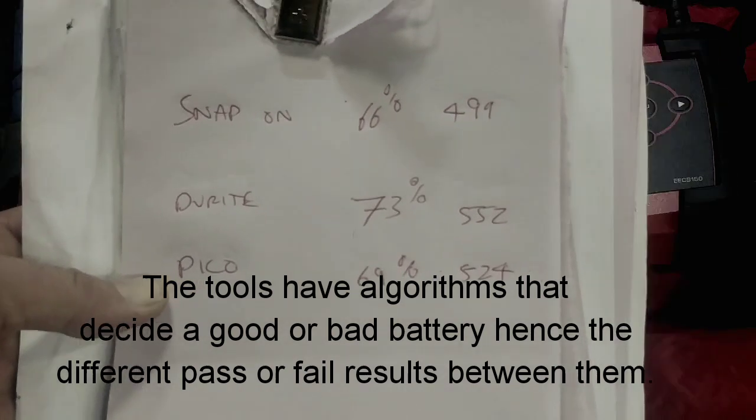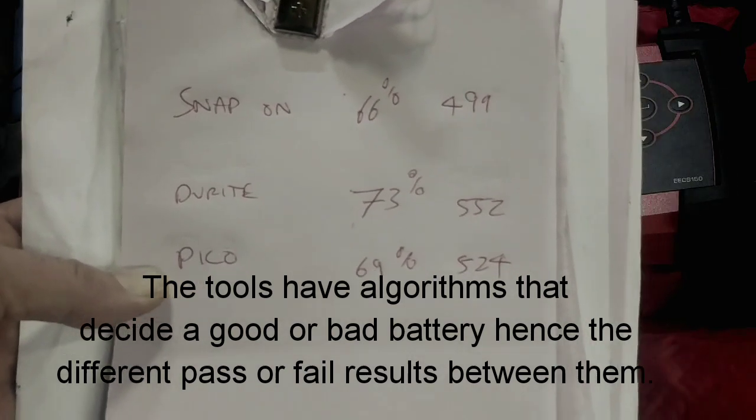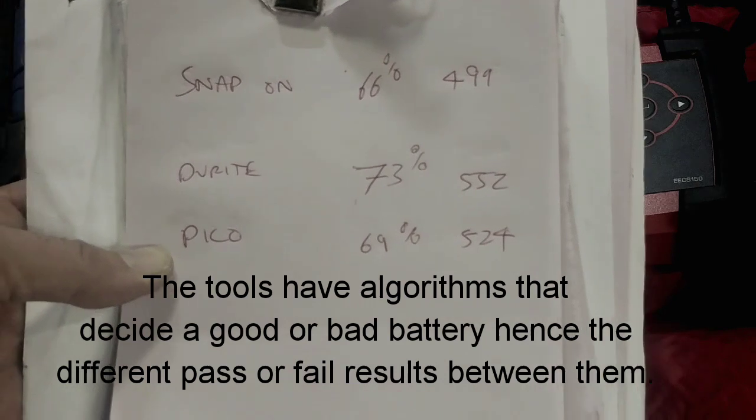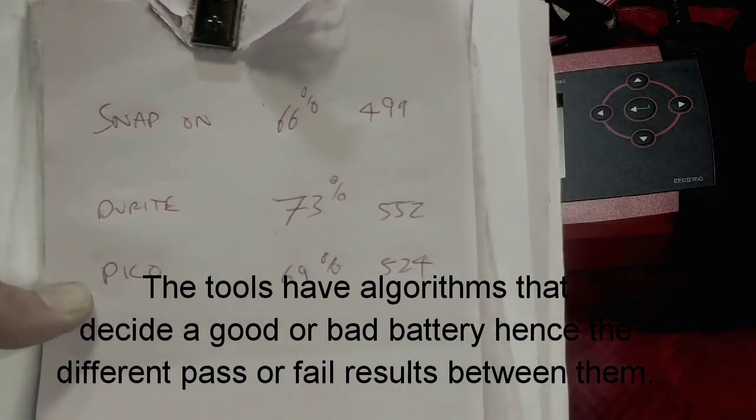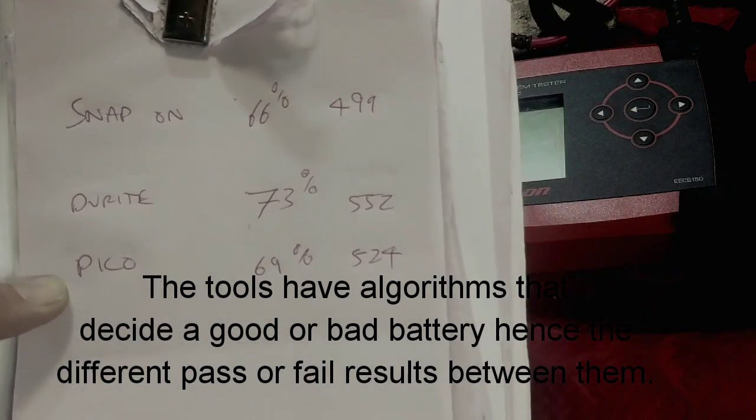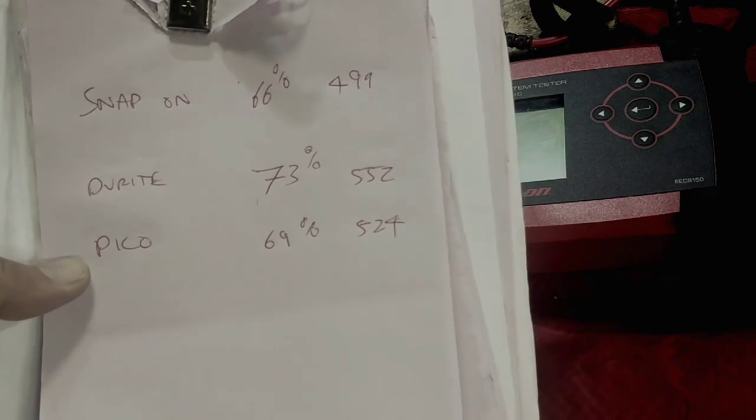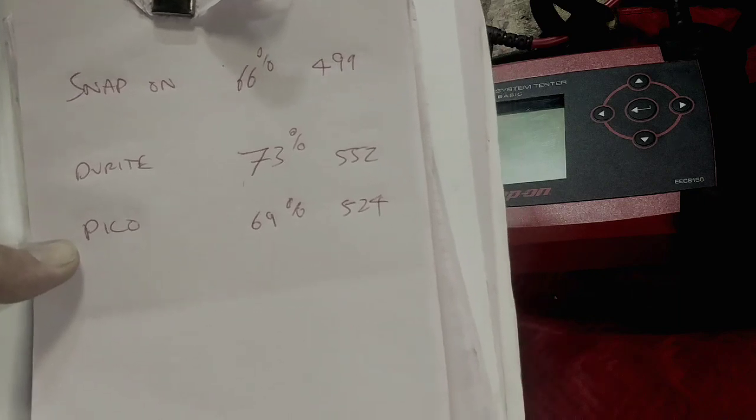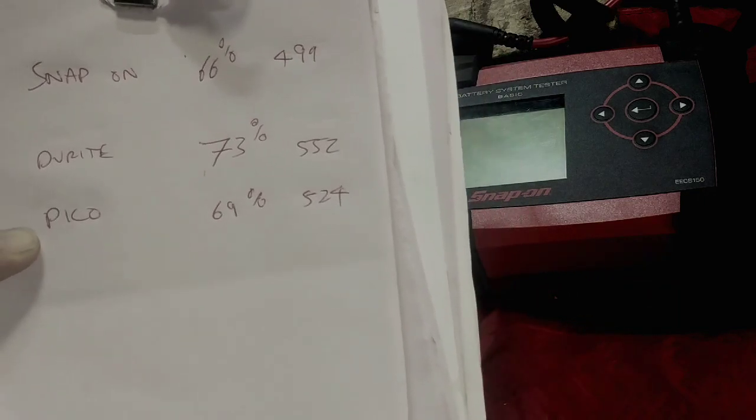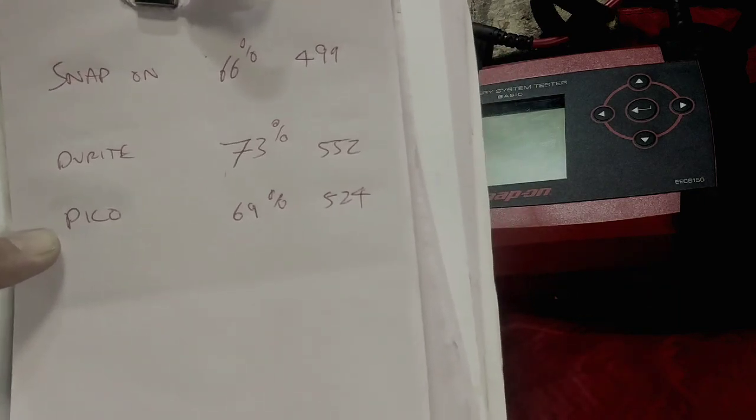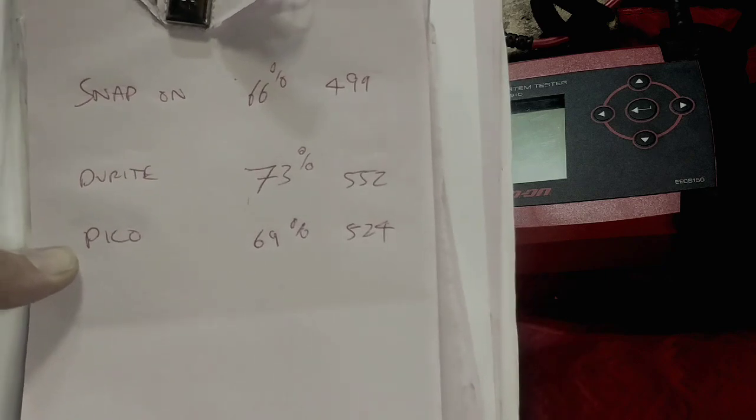So I'm quite surprised at how close and accurate they are, because there is a price variation on these, but they all seem to have produced fairly similar results. Obviously some tools have got more features than others and can look at other things other than just pure battery tests, with regards to checking an alternator charging system.